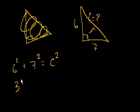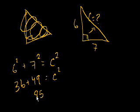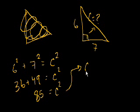And 36 plus 49 is equal to C squared. What's 36 plus 49? It's 85. 85 is equal to C squared. Or C is equal to the square root of 85.